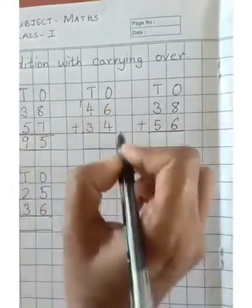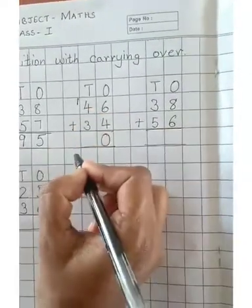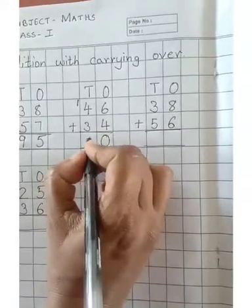Carry 1, put 0 in the ones place. So 4 plus 1 is 5. 5 plus 3 is 8.